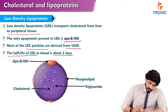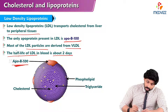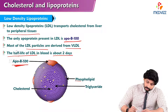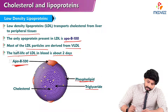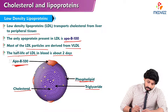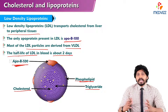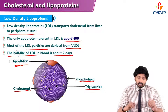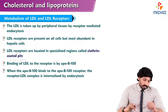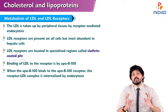Looking at the structure of LDL: ApoB100 is there, and it is also made up of a phospholipid outer layer; triglycerides and cholesterol are present. It is mainly concerned with cholesterol transportation. Coming to the metabolism part.